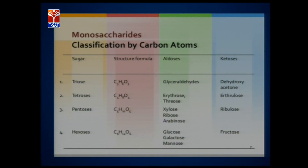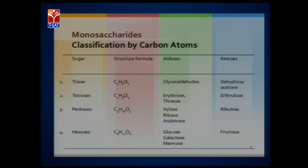Examples of hexoses include galactose, mannose, and fructose. Based on functional groups, monosaccharides are further divided into aldoses and ketoses. Aldoses are carbohydrates having an aldehyde group (CHO) in their structure. Ketoses are carbohydrates having a keto group in their structure. In chemistry we have different functional groups like aldehydes, ketones, alcohols, ethers, carboxylic acids, and amines present in the structures of different molecules.